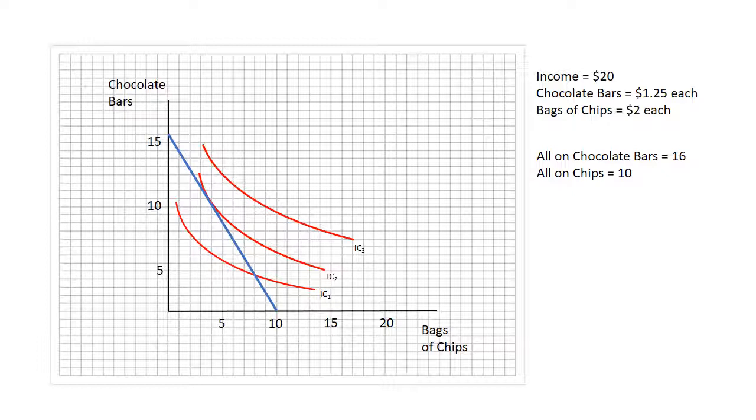I should say that in this example, even though bags of chips and chocolate bars are discrete goods—you usually can't buy half a bag of chips or half a chocolate bar—we're going to ignore that distinction and imagine that we can buy fractional chocolate bars or chips.